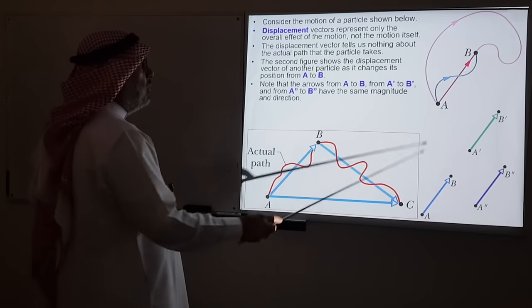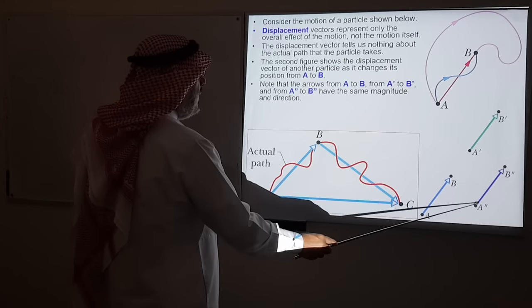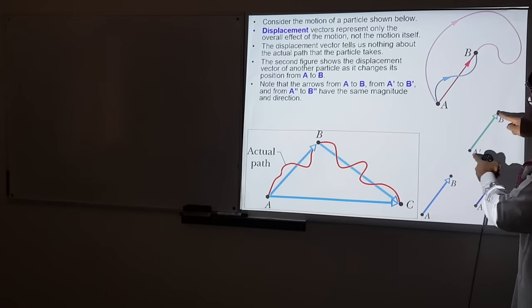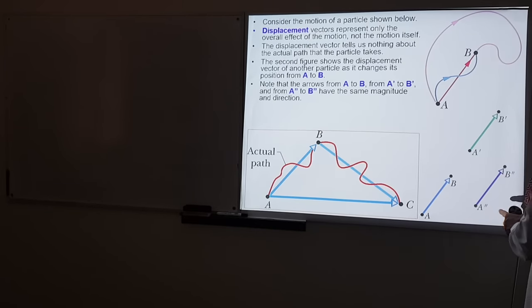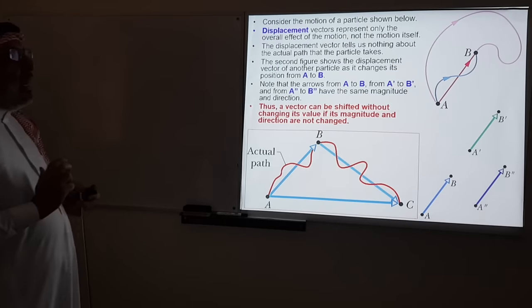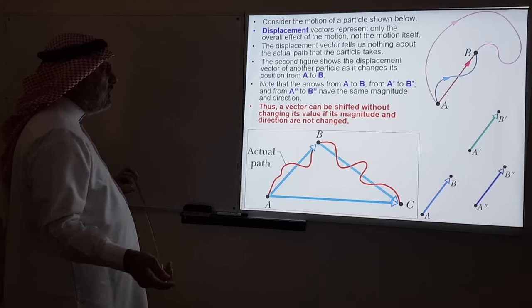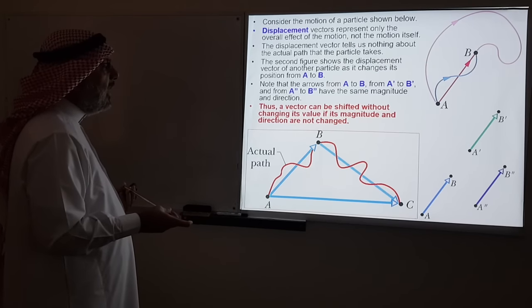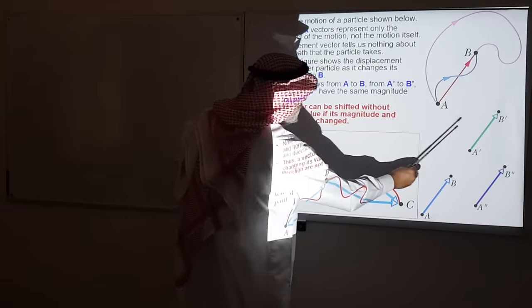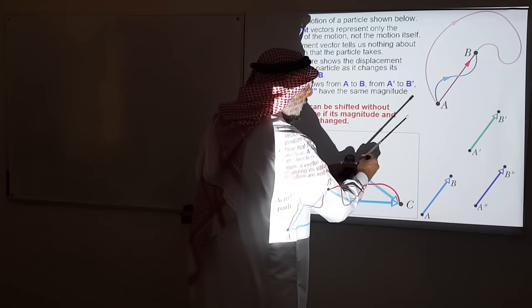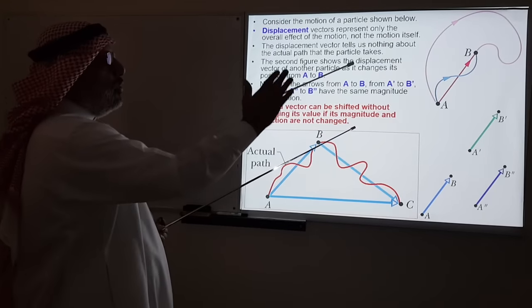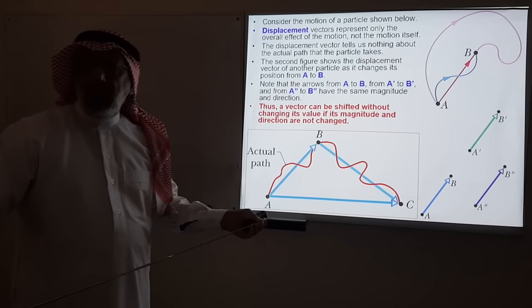The arrows from A to B, A′ to B′, A″ to B″ all have the same magnitude and point in the same direction. Therefore, a vector can be shifted without changing its value if its magnitude and direction are not changed. You can take it wherever you like in space as long as you don't change its direction or magnitude, and that will simplify the way we deal with vectors mathematically.